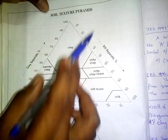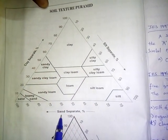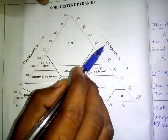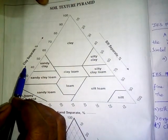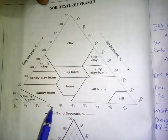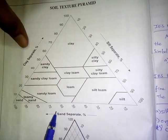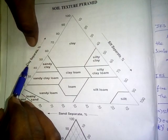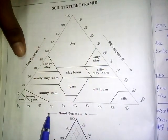Soil texture classification uses sand, silt, and clay particle percentages. Sand particles, silt particles (silt separate), and clay (clay separation and clay percentage) are the three components of soil texture. The relative percentages of sand, silt, and clay define the soil's textural class.